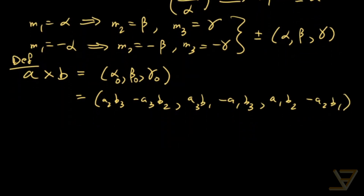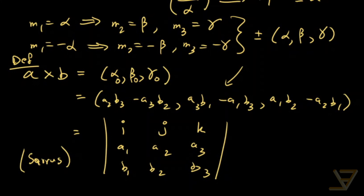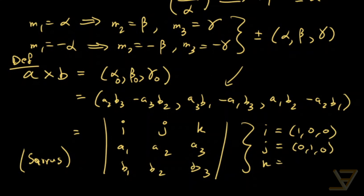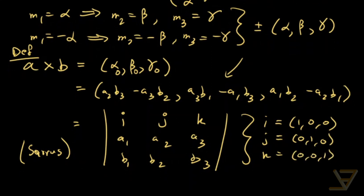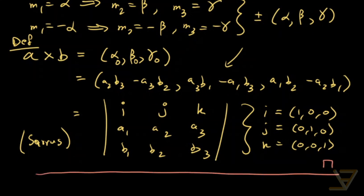The last thing I'll tell you is that there's an easy way of computing this — you don't have to memorize the formula. You can just take it as a determinant: [i, j, k; A1, A2, A3; B1, B2, B3], and use the rule of Sarrus to expand it — look it up if you don't know what it is. Here i = (1,0,0), j = (0,1,0), and k = (0,0,1). That's how you compute the cross product. Thank you for watching and I'll see you next time.